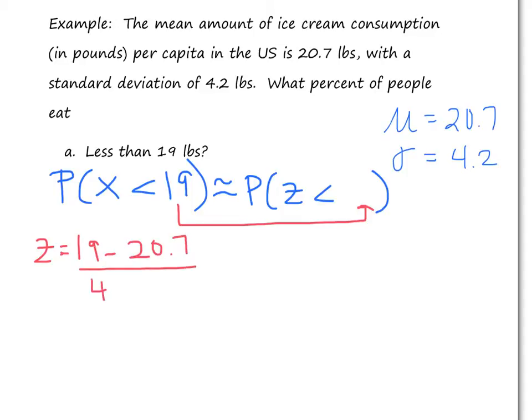I already did that ahead of time. And that Z ends up being a negative 0.40 when I round to two decimal places. So it makes sense that it's negative because the mean, the average is 20.7, and I'm converting a 19 to a Z-score. So I'm below the mean, so it should be negative. So let's look at what this is as a picture. Let me just box this off. So that's my Z-score.